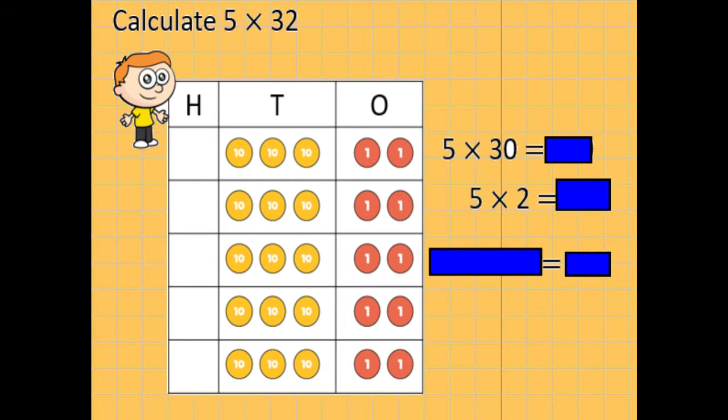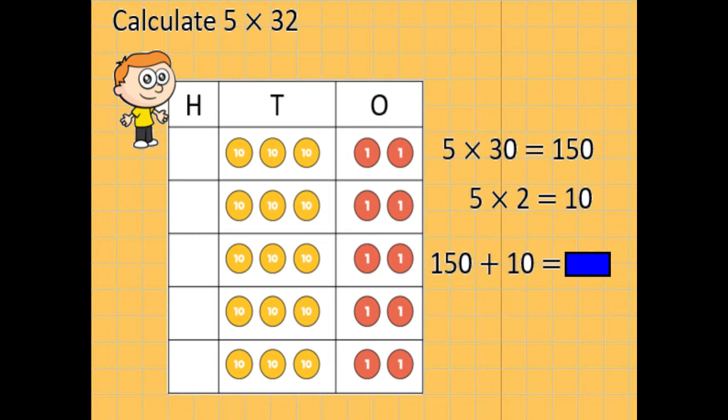Okay, have a go at this question. We've got 5 times 32. If you want to use the column method, that's fine. But also have a go at partitioning it into those two separate questions. Okay, so we've got 5 times 30, it's 150. You can use your related facts. You know that 5 times 3 is 15. So 5 times 30 is 150. 5 times 2 gives us 10. Add those two totals together, we get 160.